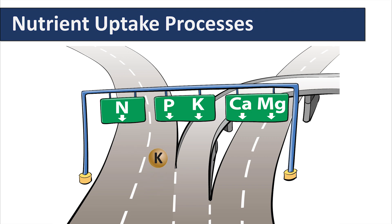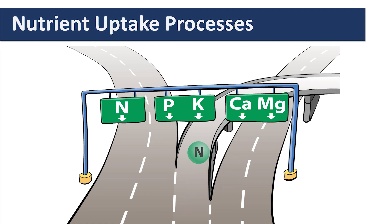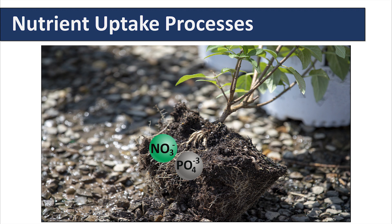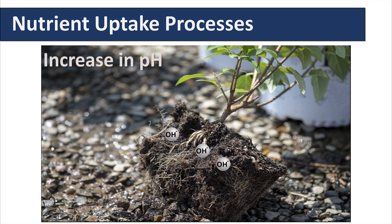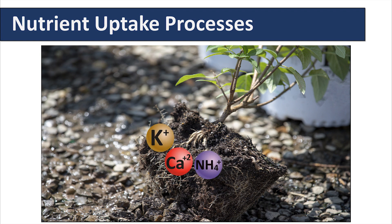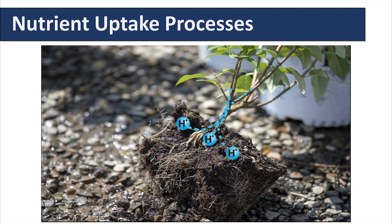However, some of these channels cannot always identify the correct nutrient from another. For example, we can create magnesium deficiencies by applying too much calcium, as these channels can take up other nutrients if they are predominant in the soil rhizosphere. Once a nutrient is taken up, the root system must maintain an ionic balance. When ions like nitrate or phosphate are taken up, hydroxide ions are released from the plant in exchange, increasing pH in the rhizosphere. Positively charged ions such as potassium, calcium, and ammonium will result in release of a hydrogen ion, causing acidification of the root zone.